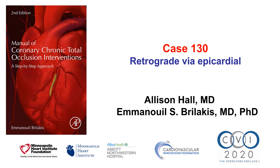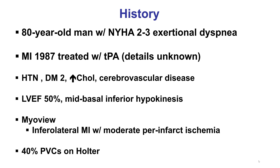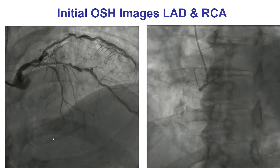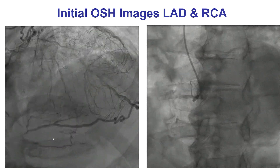This is a case of retrograde crossing through an epicardial collateral. The patient was an elderly man with progressive dyspnea. He had a stress test positive for inferior ischemia, multiple PVCs, and borderline ejection fraction. He underwent coronary angiography at an outside hospital showing severe three-vessel coronary artery disease with lesions in the LAD and circumflex, as well as a CTO of the second OM and the right coronary artery. The patient refused coronary bypass graft surgery and underwent PCI of the LAD at the outside facility, followed by referral to our facility for CTO PCI.